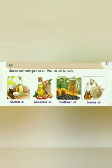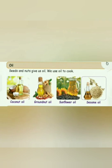We get oil from seeds and nuts, and we use oil for cooking. Few oils which we use for cooking are coconut oil, groundnut oil, sunflower oil, and sesame oil. Sunflower oil comes from sunflower seeds, coconut oil from coconut, groundnut oil from peanuts, and sesame oil from sesame seeds.